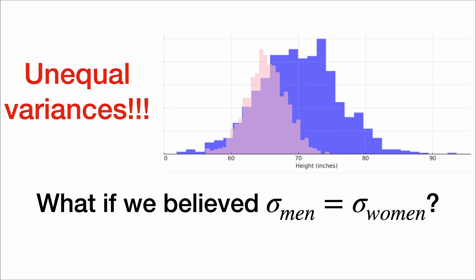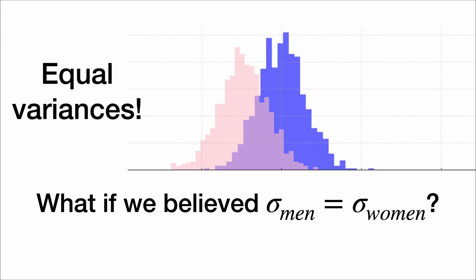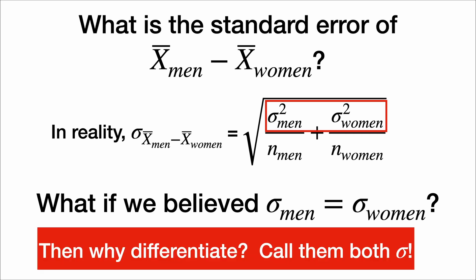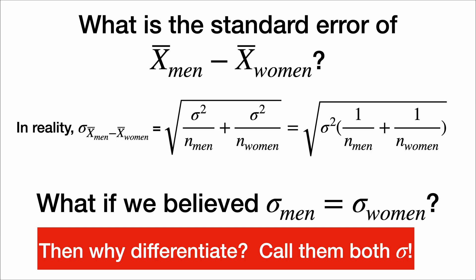Here's an example where they have unequal variances. You can see that the men, in blue, have a much wider variation in height. But we might think that this is a more reasonable assumption. So if we believe the standard deviations are equal, why differentiate between them? Let's just call them both sigma. And if they're both sigma, we can actually factor out the sigma and write it like this.